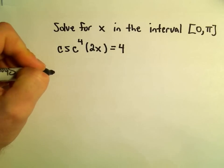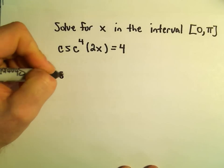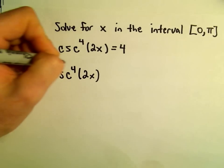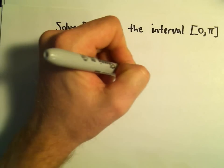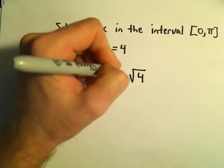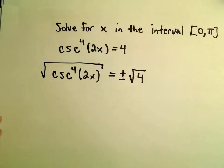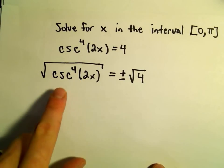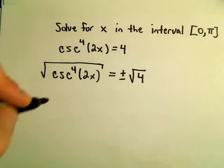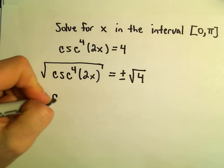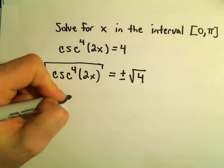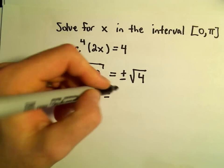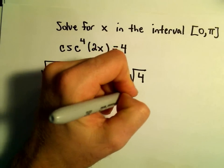If we take the square root of both sides — the square root of cosecant to the fourth of 2x — we take the square root of the right side with a positive and negative. If you take something to the fourth power and square root it, it gives us something to the second power. So that simply gives us cosecant squared of 2x equals positive or negative 2.